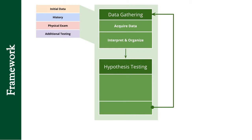With data gathering, it really includes two steps: acquiring data — that means knowing which data to get and being able to get it correctly — as well as interpreting and organizing it, so making sense of that information that you got.